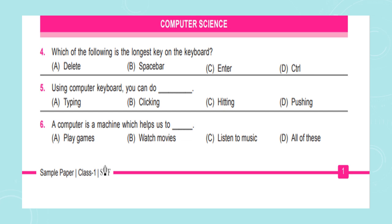Question number 6: A computer is a machine which helps us to ___. Option A: Play games, Option B: Watch movies, Option C: Listen to music, Option D: All of these. The answers: The longest key on the keyboard is the spacebar. Using the computer keyboard, you can do typing. A computer helps us to play games, watch movies, and listen to music — so the answer is D, all of these. All questions related to the keyboard and its keys are discussed in Chapter 5 in our channel.